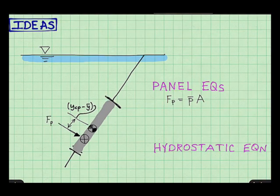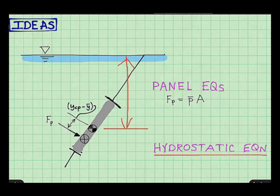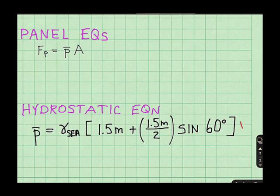To find p bar, I need to find the pressure at this depth, or the pressure at the depth of the centroid. So I need to solve for this distance using geometry, and then multiply by the specific weight of the water. And the equation I'm going to use for this is the hydrostatic equation. And let me go ahead and write down the results after I apply the hydrostatic equation.